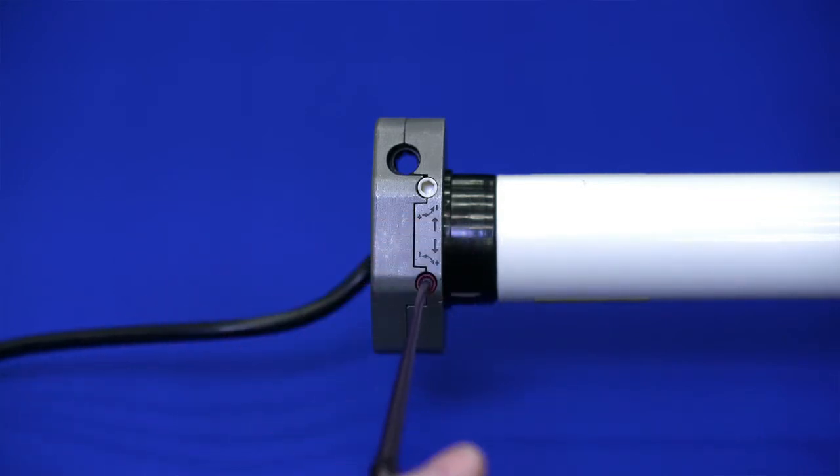To adjust the amount of travel insert the tool and rotate to the positive or negative direction. Each adjustment should be followed by pushing the appropriate directional arrow on the control board until you've reached the desired limit positions.